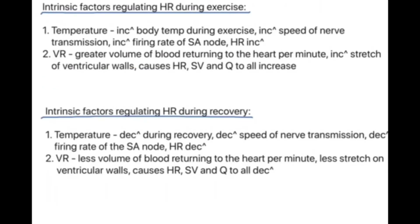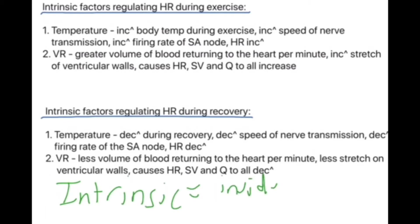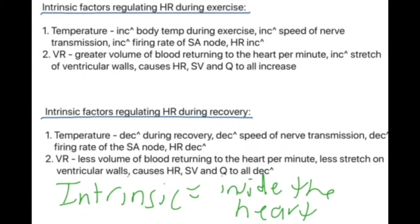Moving on, we are going to look at the intrinsic factors regulating heart rate during exercise — intrinsic meaning inside the heart. The two factors are temperature and venous return. When exercising, body temperature increases because you're creating all this thermic energy. This increases the speed of nerve transmission, which increases the firing rate of the SA node, consequently increasing heart rate. With venous return, there is now a greater volume of blood returning to the heart per minute, which increases the stretch of the ventricular walls, causing heart rate, stroke volume, and cardiac output to all increase.